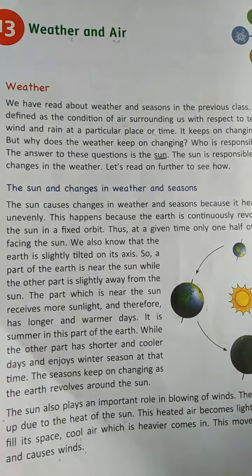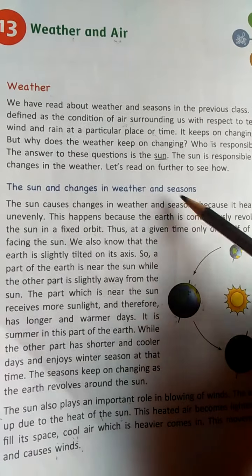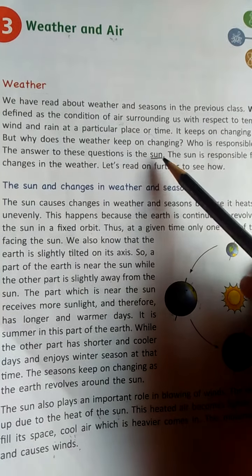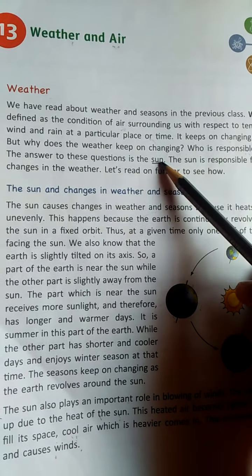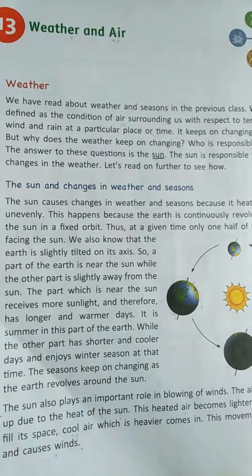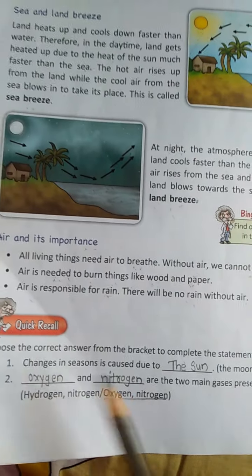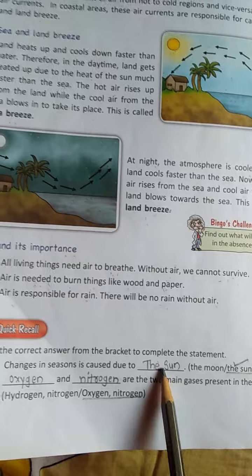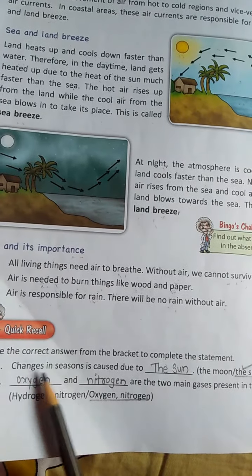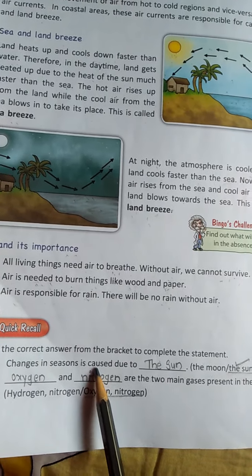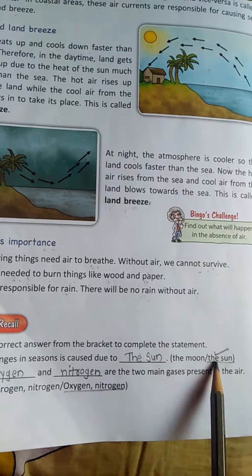In this lesson we learn about changes in weather and seasons. Who is responsible for this? The sun is responsible for changing regions, seasons and weather. In this chapter, fill in the blanks includes: changes in season are caused due to the sun.